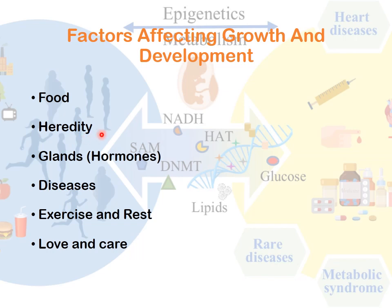Heredity is the transfer of genes, the unit of inheritance, from parents to offspring. The characteristics we have are inherited from our parents, which is why we look like our parents in so many ways. If both parents are tall, the child is likely to be tall; if both parents are short, the offspring is likely to be short. If the parents have a large body size, there is a probability the offspring will also have a large body size. Heredity determines the traits we inherit, which in turn influences our growth and development.